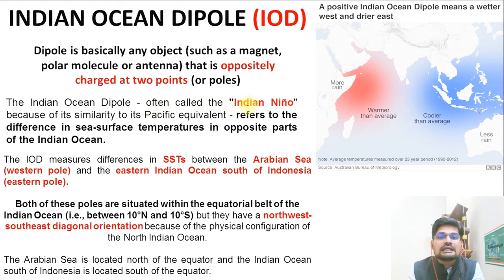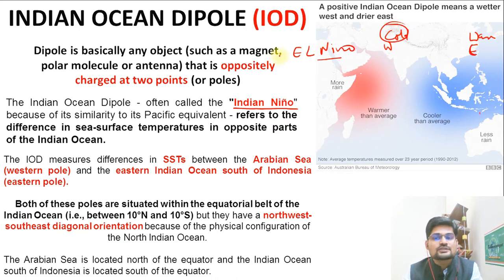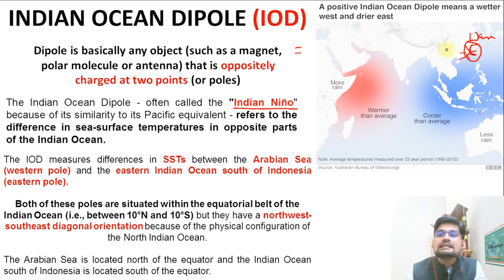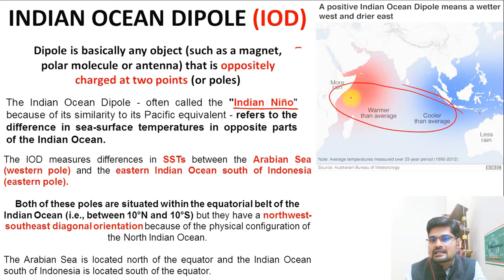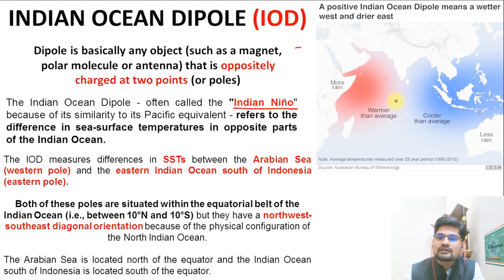The Indian Ocean Dipole is often called 'Indian Niño.' Remember El Niño — in El Niño years the Eastern Pacific warmed up and the Western Pacific became cold. Similarly, some kind of dipole movement happens in the Indian Ocean as well. In this particular zone — the cross-equatorial area — both sides of the equator form an intertropical convergence zone, and the ITCZ moves north and south as we have studied in climatology.